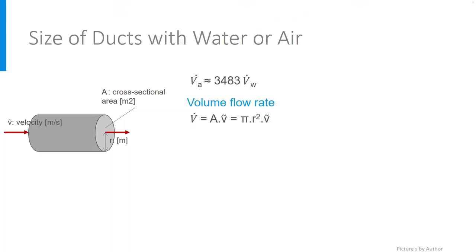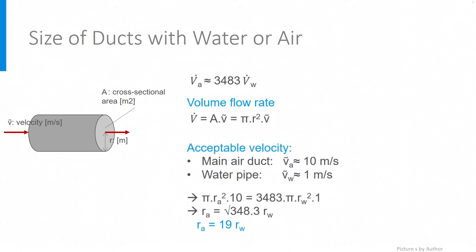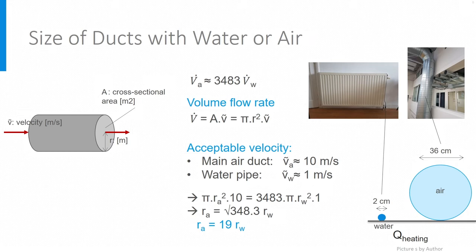What does that mean for the size of the ducts? The volume flow rate of a fluid equals the cross-sectional area of the pipe times the velocity of the fluid, or π × R² × velocity, where R is the radius of the pipe. Because of noise and pressure, it is better to limit velocity in ducts: in a main air duct, the velocity will be around 10 m/s, while in a water pipe it will be around 1 m/s. Using these values, the radius of the air pipe should be 19 times that of the water pipe. In general, a water pipe from boiler to radiator has a diameter of about 2.5 cm, while an air duct transporting the same quantity of heat needs a diameter of 36 cm.